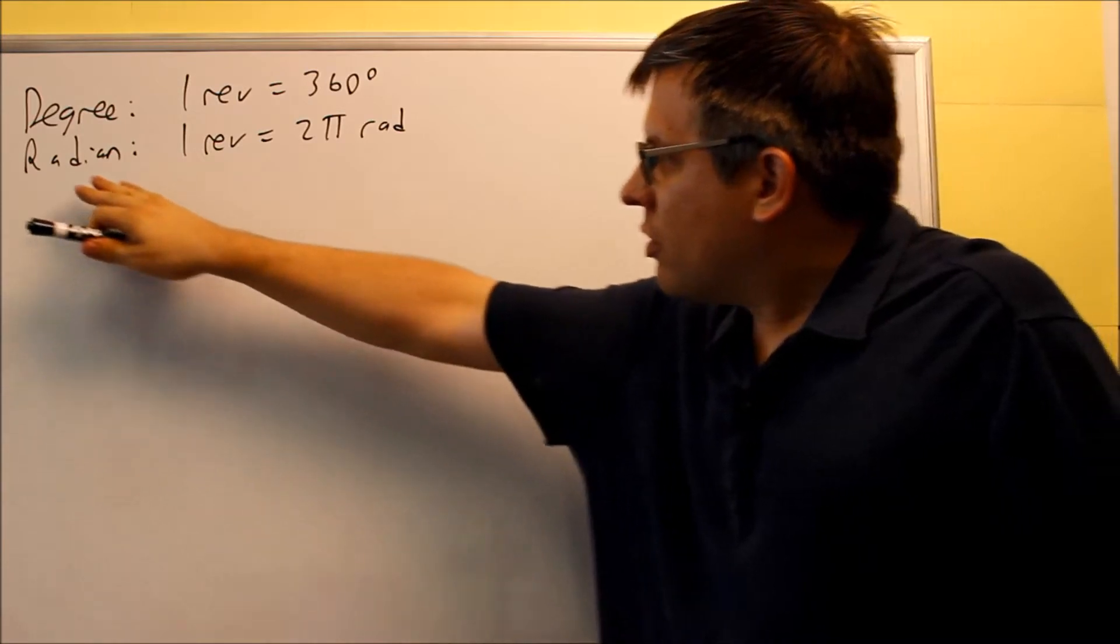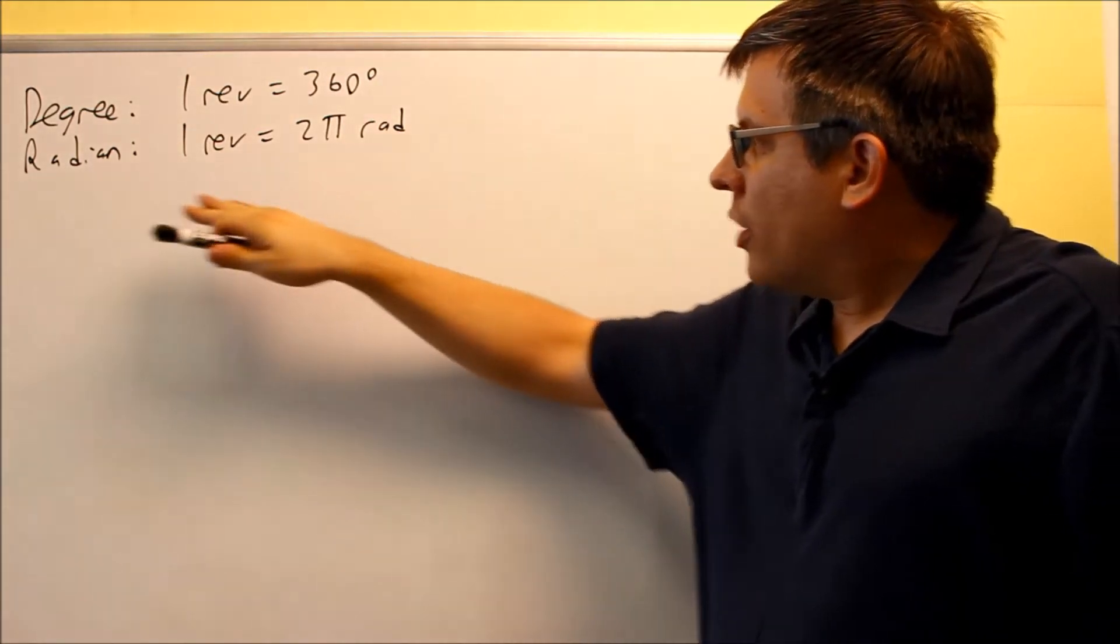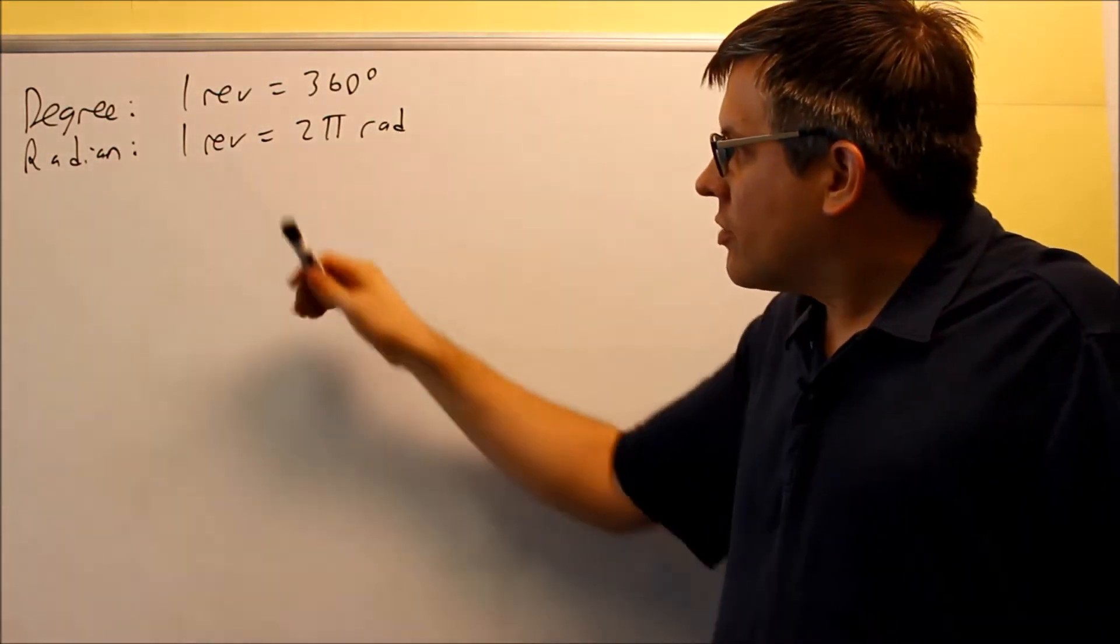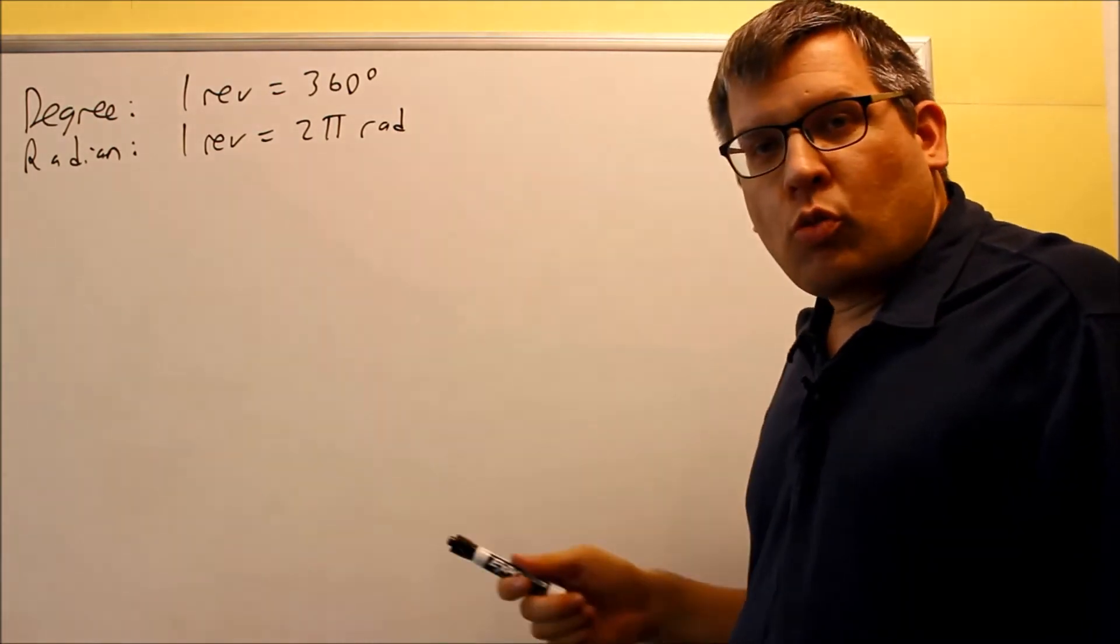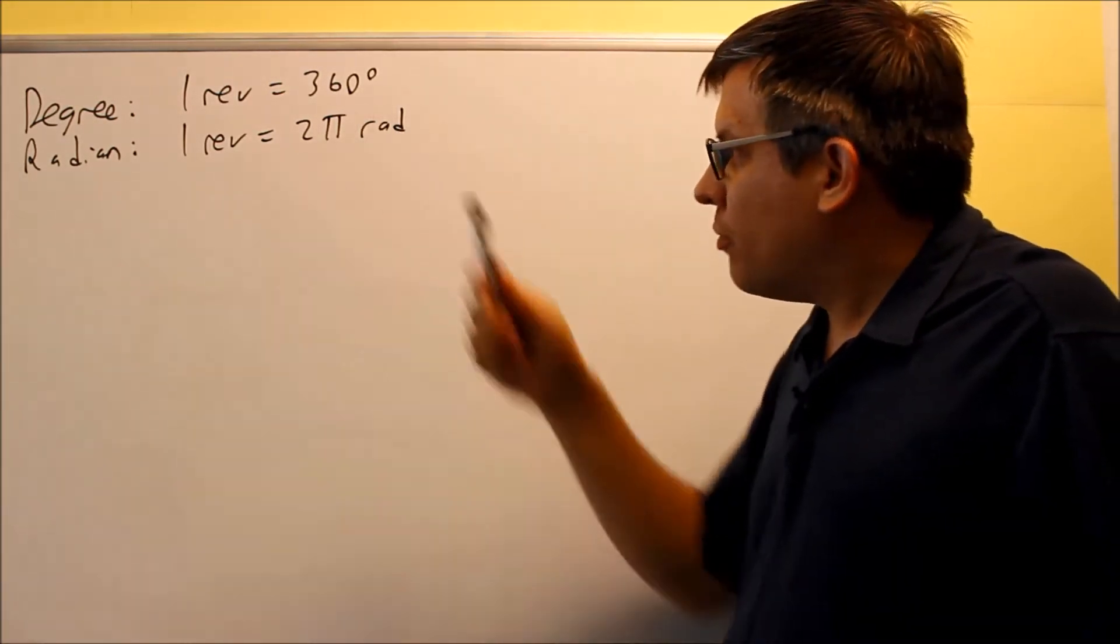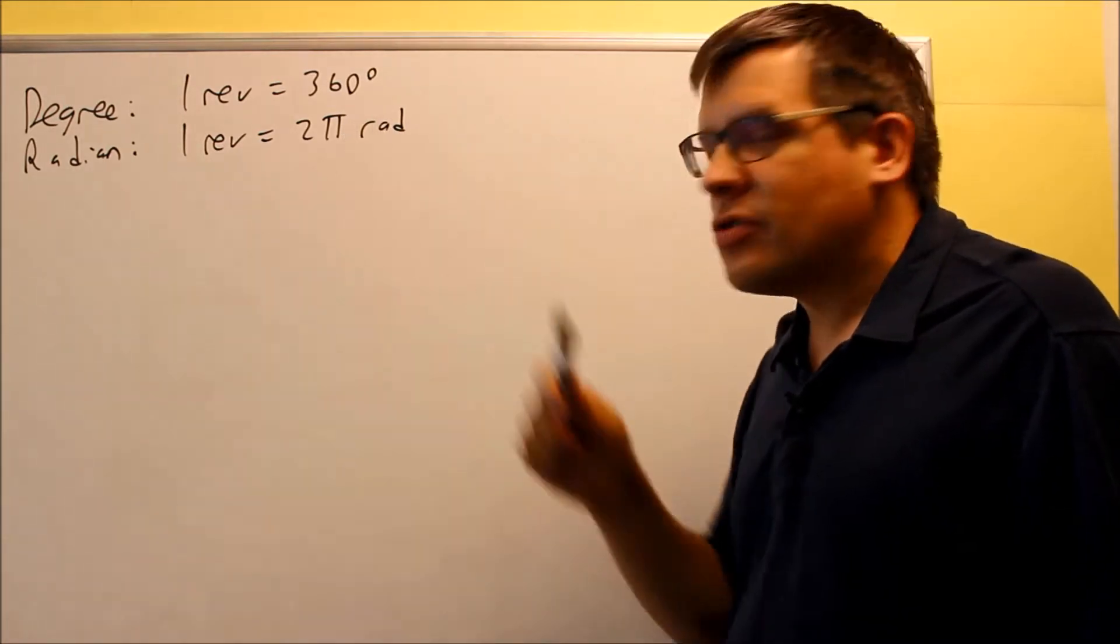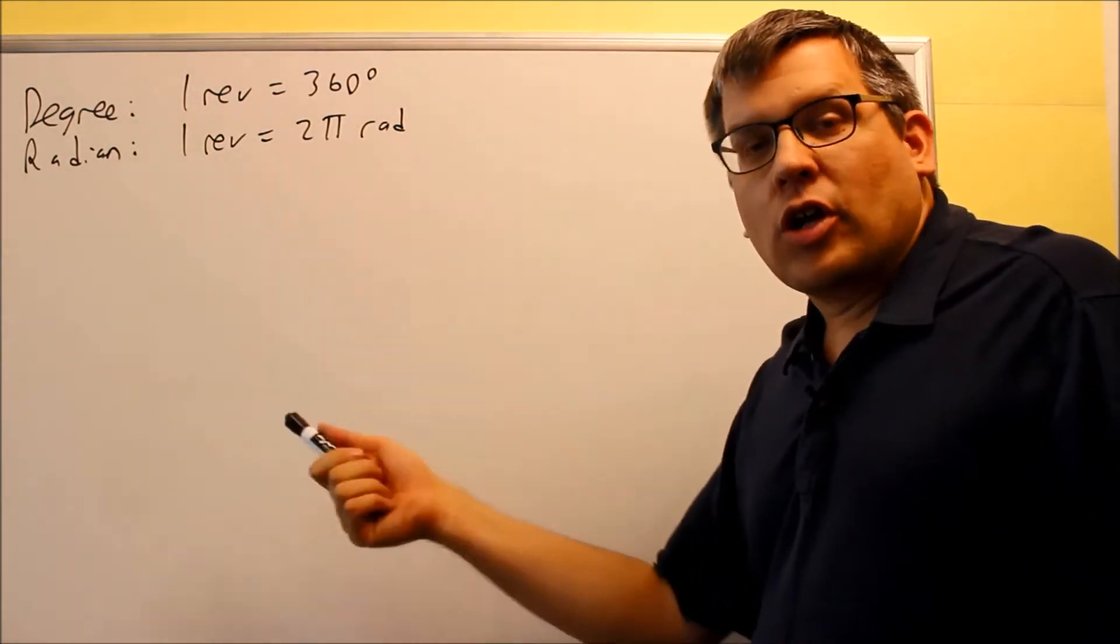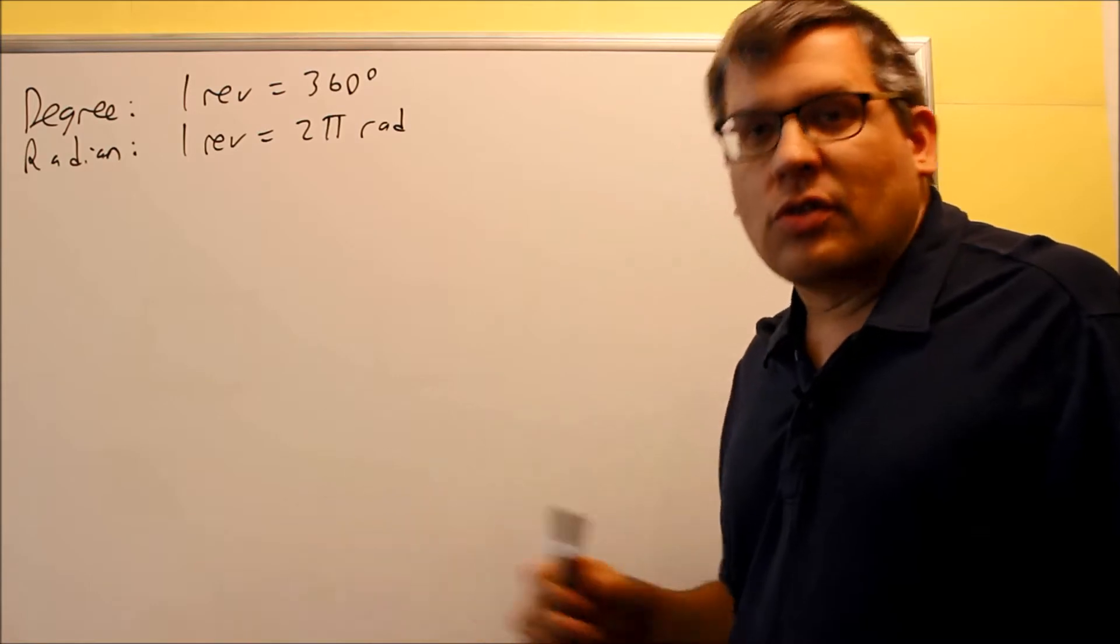Besides degrees, we have another unit of measurement that you may not have seen before, and we're going to use radians. Now radians, one trip around the circle, one revolution, is the same thing as 2π radians. The π would be 3.14, the same π that's used in the area of a circle formula and circumference and things like that.